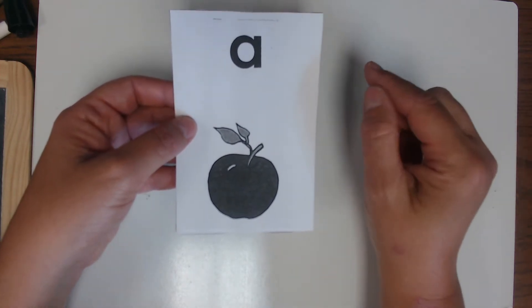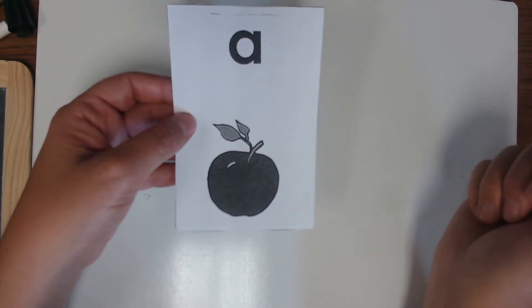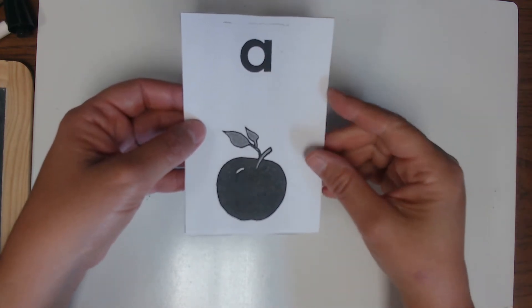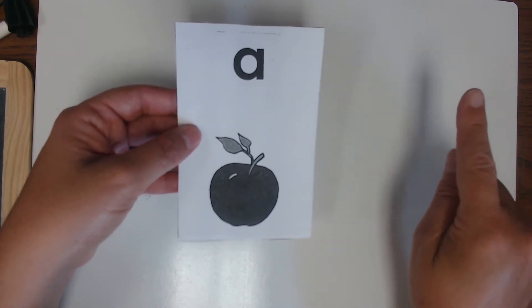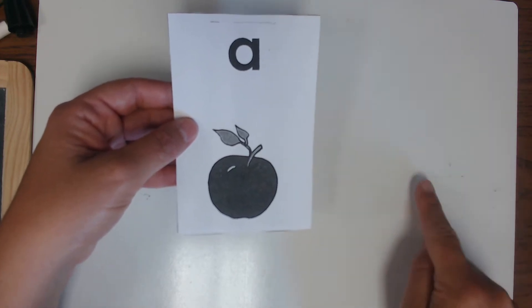Now the other thing you can do is you can have students form the letter. Usually I do this in the air while they are naming the letter. So for kiddos, it would look like this: A, Apple, A. A, Apple, A.